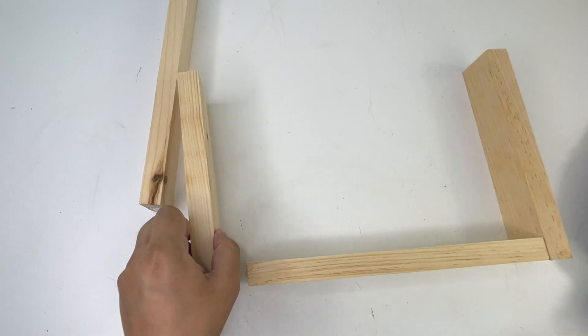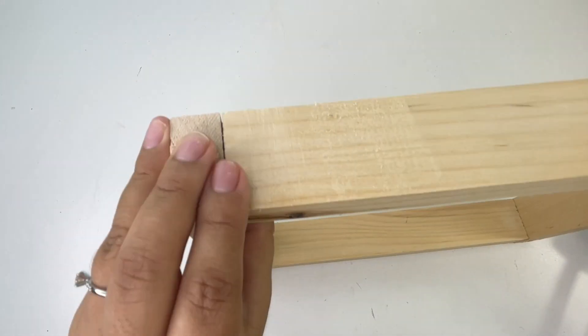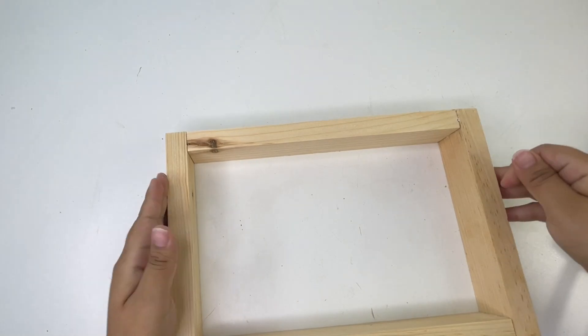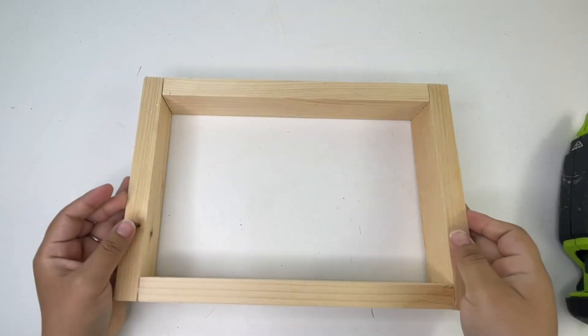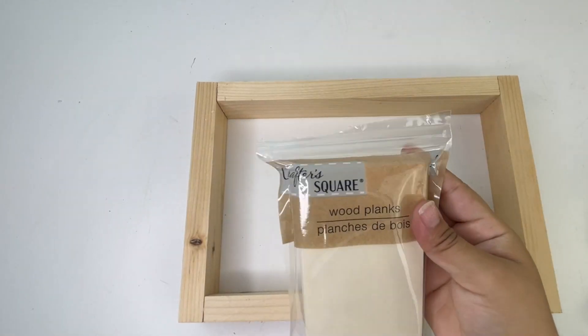Then for the bottom I'm using this pack of Dollar Tree wood planks. Six come in the pack, I'm using four of them.